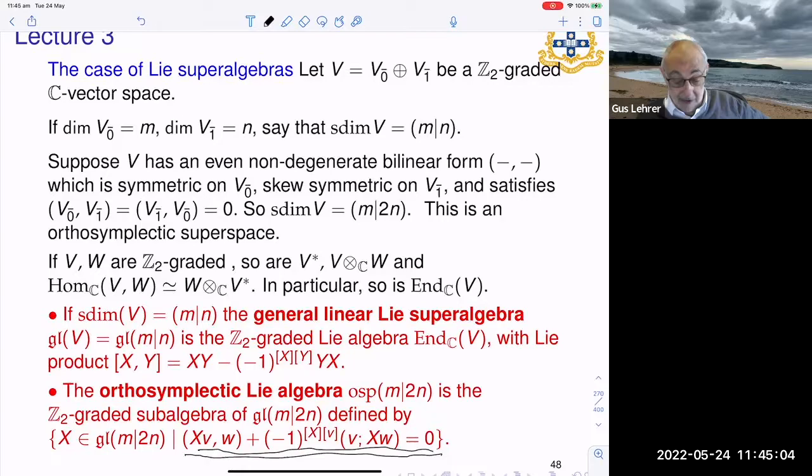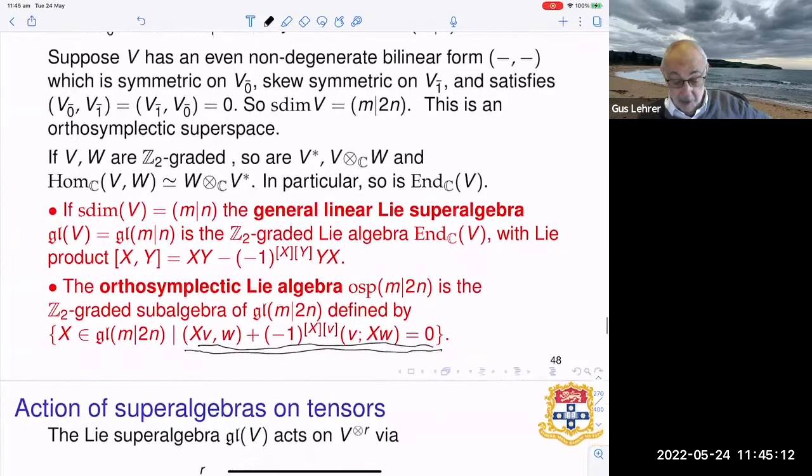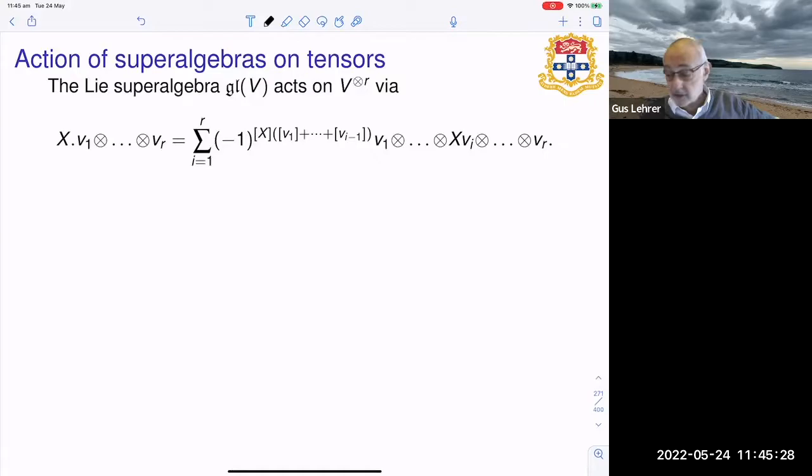Lie super algebras act on the space of tensors just like in the non-super world except that you have a sign. This sign, and the rule is basically every time you interchange something you add a sign. So for example if x moves past v_1 you have to put a sign (-1)^{|x||v_1|}. And that's how all of these arise. You can check that this is a perfectly good action.